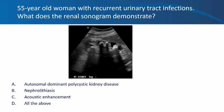Next question: a 55-year-old woman with recurrent urinary tract infections undergoes kidney ultrasound. Is the finding autosomal dominant polycystic kidney disease, nephrolithiasis, acoustic enhancement, or all of the above? In this longitudinal section of the right kidney, the orientation marker indicates upper pole at top. It is less likely ADPKD because there are no localized black cystic structures. Since acoustic enhancement is a property of cystic lesions, and we've ruled those out, we're left with nephrolithiasis as the correct answer.